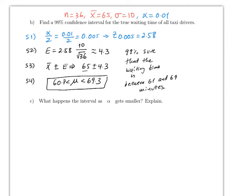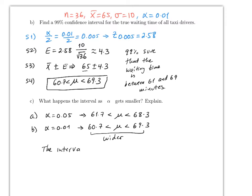Now the explanation is the same as the previous one, except that now you are 99% sure the waiting time is between 61 and 69 minutes. Now, what happens to the interval as alpha gets smaller? Explain. Well, this is what we mean by alpha gets smaller. In part A, alpha was 0.05. And in part B, alpha was 0.01. So the interval for this one was 61.7 to 68.3. Well, this one is 60.7 to 69.3. Clearly, you can say that this is wider. So therefore, as alpha gets smaller, the interval gets wider. It doesn't mean necessarily that it's more accurate. It's just wider. That's it.